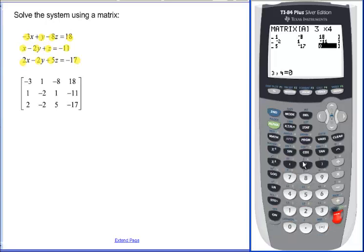So here's my matrix. Make sure everything looks appropriate. Uh-oh. I've gotten off a row here. So 2, negative 2. 5, and negative 17. Okay. So always double check.